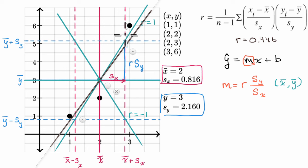I'm not proving it here in this video. But now that we have an intuition for these things. Hopefully you appreciate this isn't just coming out of nowhere and it's some strange formula. It actually makes intuitive sense. Let's calculate it for this particular set of data. M is going to be equal to r, 0.946 times the sample standard deviation of y, 2.160 over the sample standard deviation of x, 0.816.